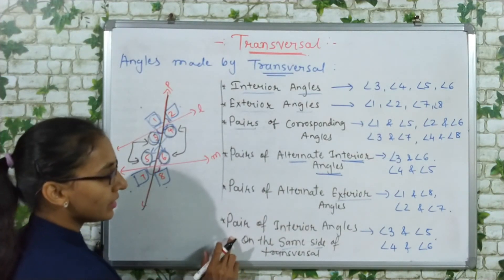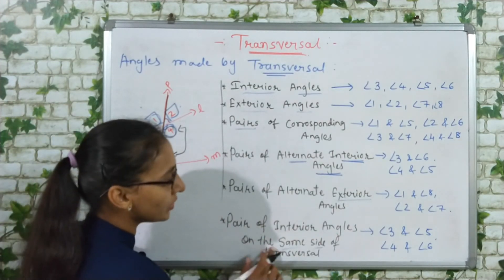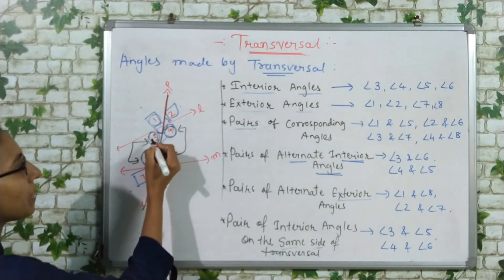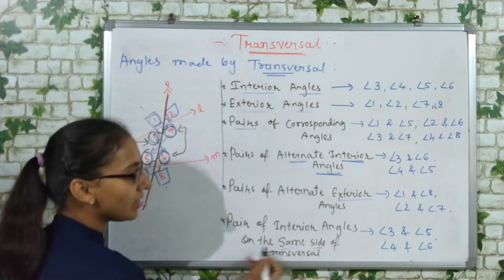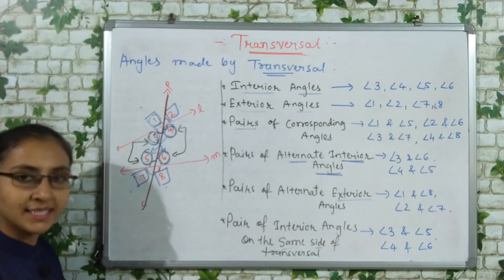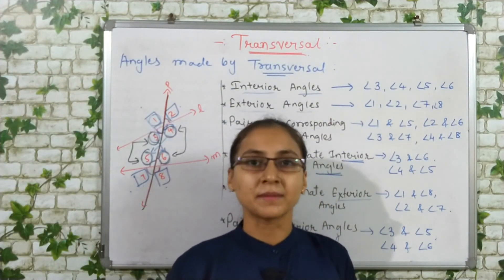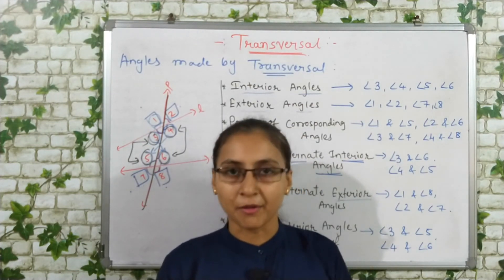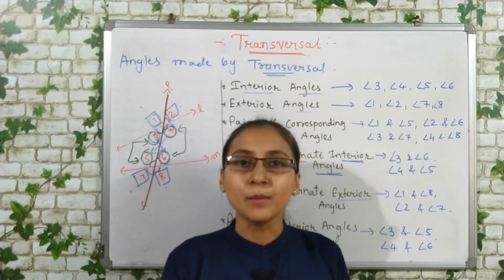So to summarize today's video: we learned that a transversal is a line that intersects two or more lines at distinct points. We also discussed the various types of angles formed by a transversal — interior, exterior, corresponding, alternate interior, alternate exterior, and co-interior angles.